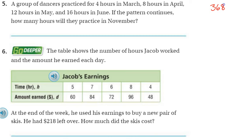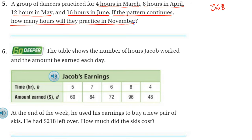I'm on the top of page 368 of the GoMath textbook, follow along. Number 5: A group of dancers practice for 4 hours in March, 8 hours in April, 12 hours in May, 16 hours in June. If the pattern continues, how many hours will they practice in November?